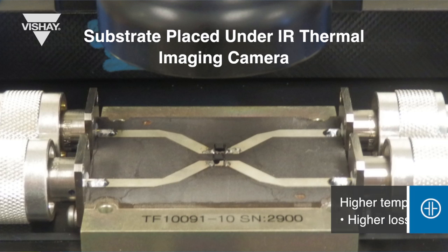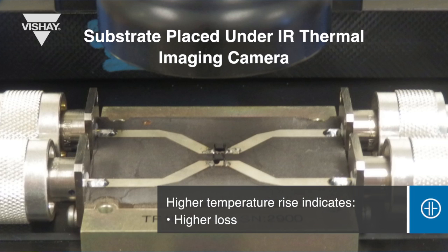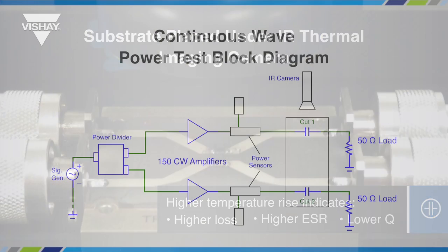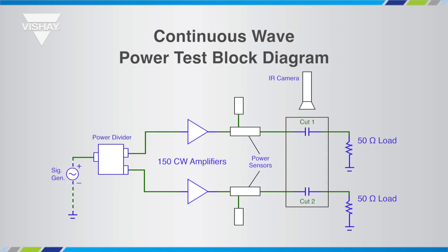A higher temperature rise indicates higher losses, higher ESR, and lower Q. The schematic shows the symmetrical feeding of both capacitors at the same power level and frequency.